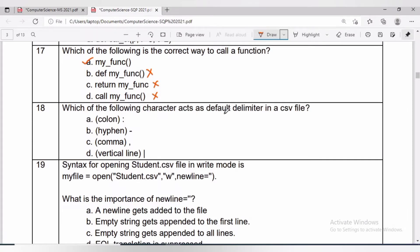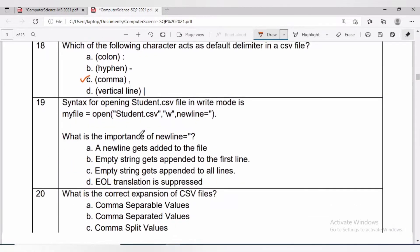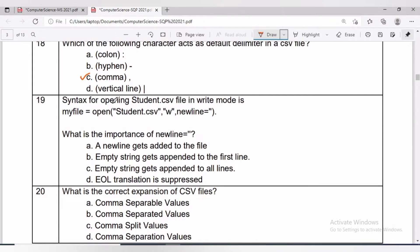Question 18 is: which of the following character acts as default delimiter in a CSV file? The default delimiter will be comma, which is option C. Question 19: syntax for opening student.csv file in write mode with newline parameter.